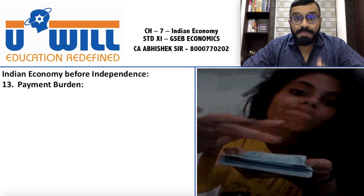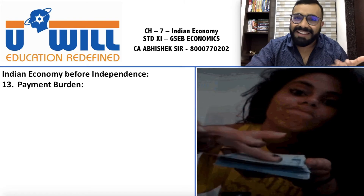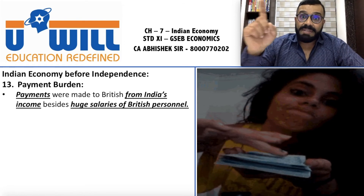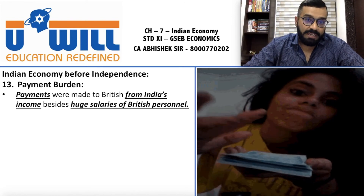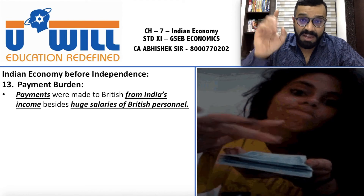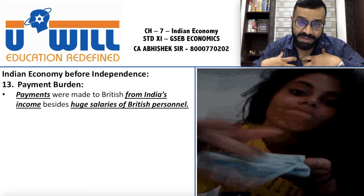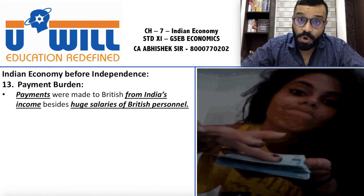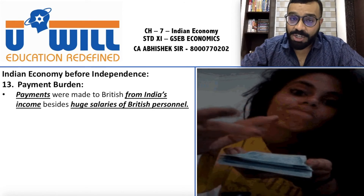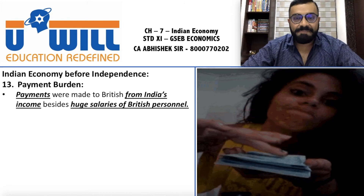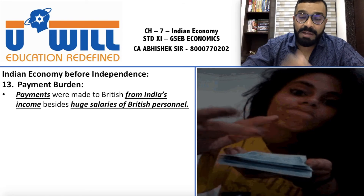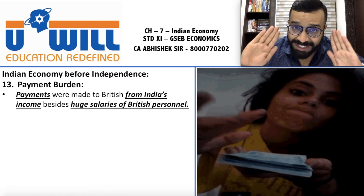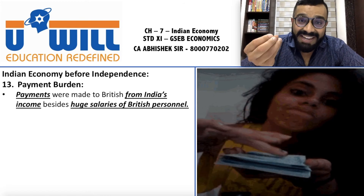Point number 13 — Payment Burden. Matlab paisa yahan se bindaas ja raha tha, koi use rokne waala nahi tha. Payments were made to British from India's income — besides huge salaries of British personnel. Whosoever was working in the British administration — unki salaries, unka pension, unka gratuity, unka khaane peene ka kharcha — yeh sab India ki income se pay hota tha. Matlab khulam khula loot machi hui hai, do nahi chaar haathon se — aur isliye India khaali ho gaya.